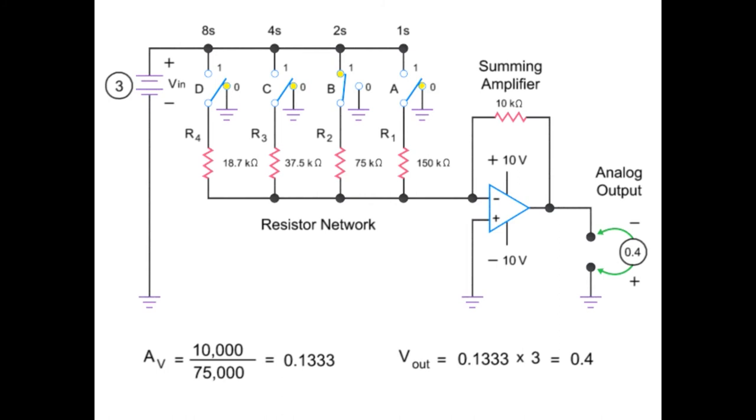Let's switch in another resistor value and look at what the voltage output would be. A binary input of 1.000 closes switch D, resulting in an input of 18.7 kilohms. The gain then would be 0.535, giving a final output of 1.6 volts. As previously mentioned, observe how the voltage increments by 0.2 as we open and close the various switches based on binary inputs.